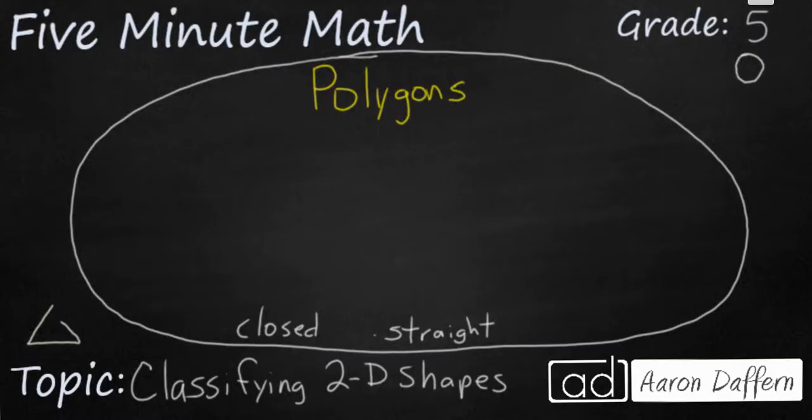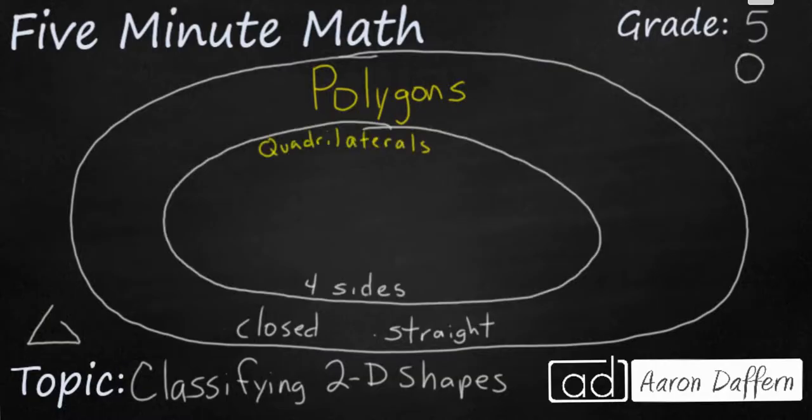Within polygons is a smaller group of shapes called quadrilaterals. Quadrilaterals are polygons that have four sides. So if I wanted to draw an example of something that was not a quadrilateral I could draw a triangle out here because that has three sides or I could draw a hexagon out here that has six sides. But anything inside this inner shape is going to have to have four sides.